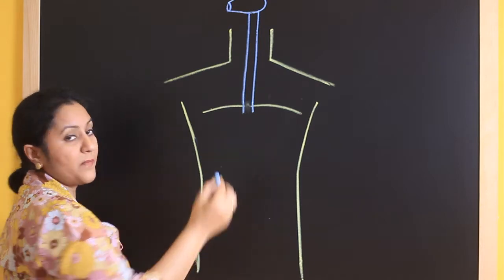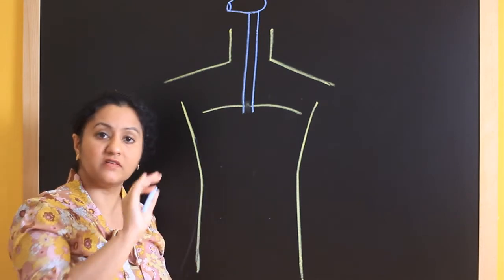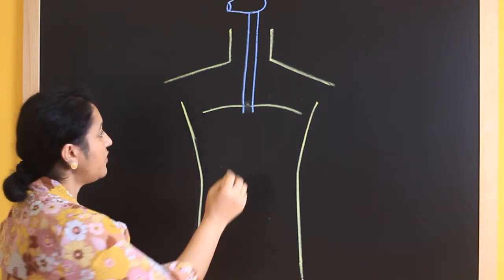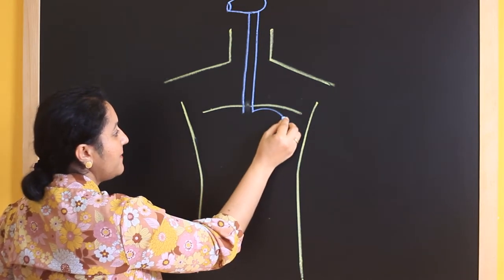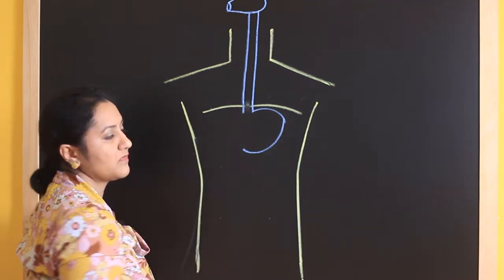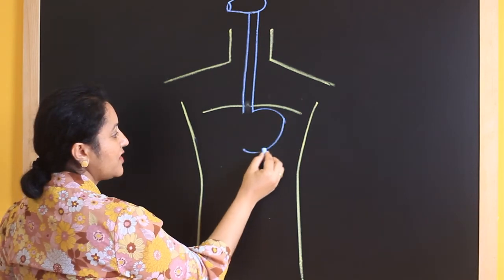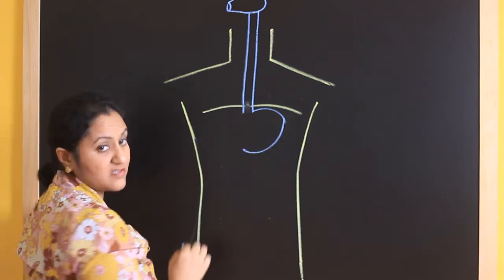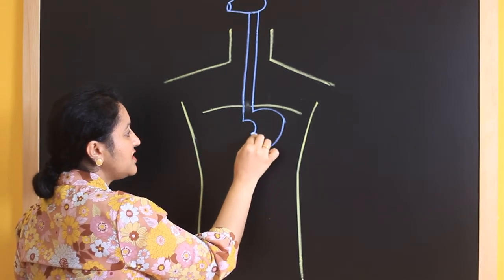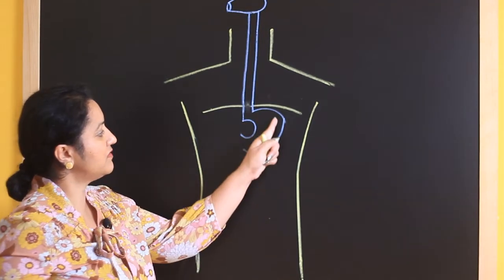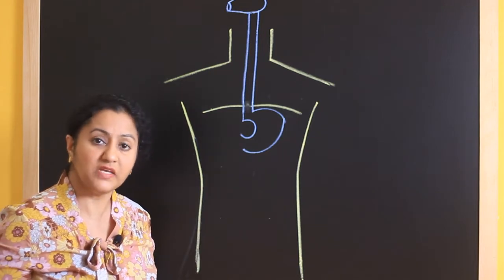Now comes to the stomach. Stomach is a bag shaped structure. Generally it is said to be having a J shape. So we will draw a J here. This is a stomach and just draw a C over here. This is how you get the structure of the stomach.